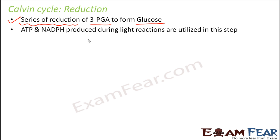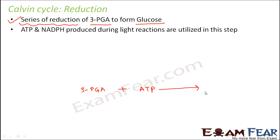Here ATP and NADPH produced during light reactions are utilized in this step. We will be utilizing the ATP molecules which were produced during the light reaction. This was the product of the previous step, that is 3-phosphoglycerate. On this phosphoglycerate, ATP will add. It will utilize the ATP and it will form an intermediate molecule called 1,3-bisphosphoglycerate.